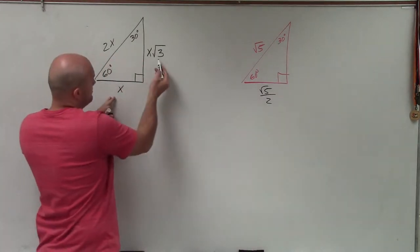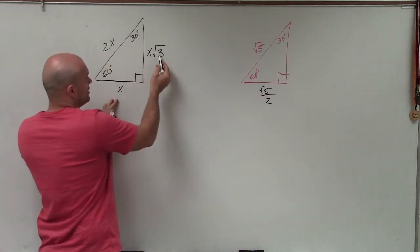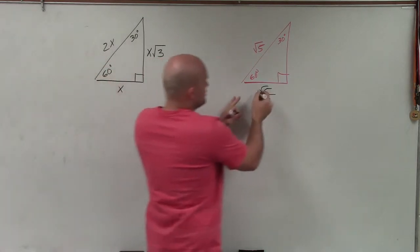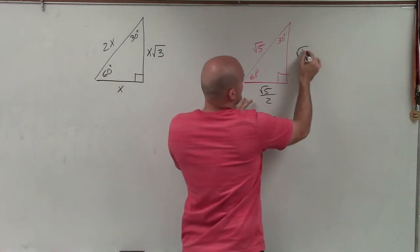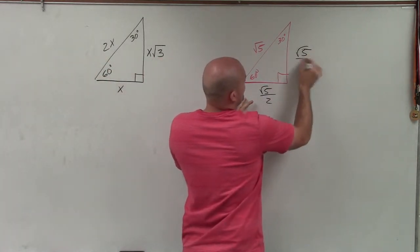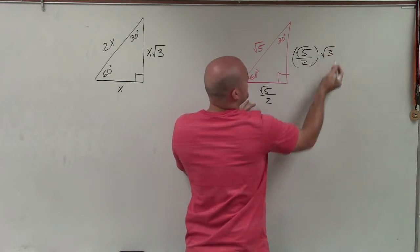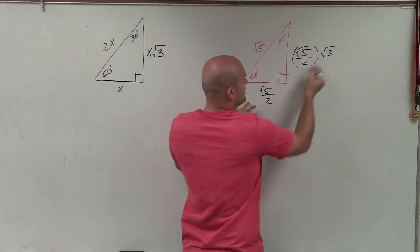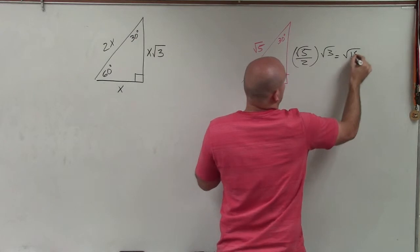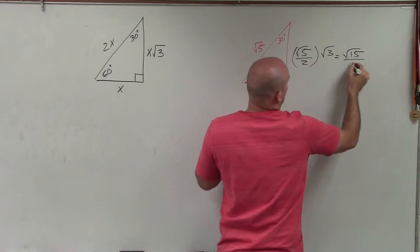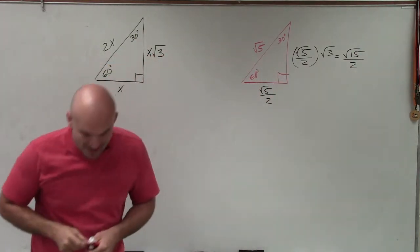Then to go from my short leg to my long leg, I just multiply by the square root of 3. So I'm going to take this value of my short leg — square root of 5 divided by 2 — and multiply it by the square root of 3. The square root of 5 times square root of 3 equals the square root of 15, over 2. And that's going to be the length of my long leg.